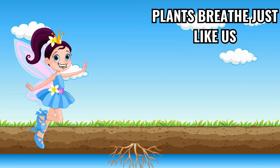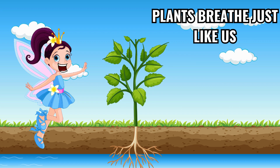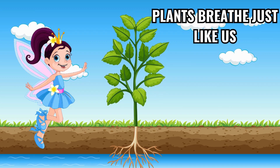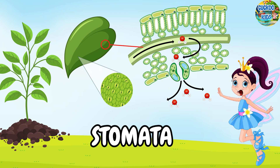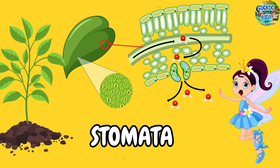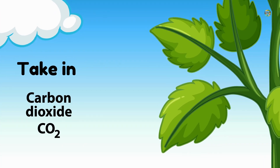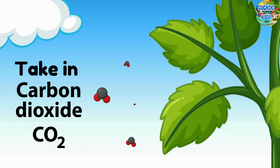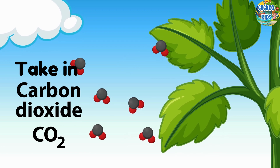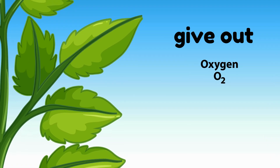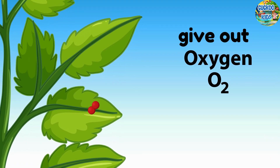Plants breathe just like us. Plants have tiny openings called the stomata, through which they breathe in carbon dioxide and take out oxygen.